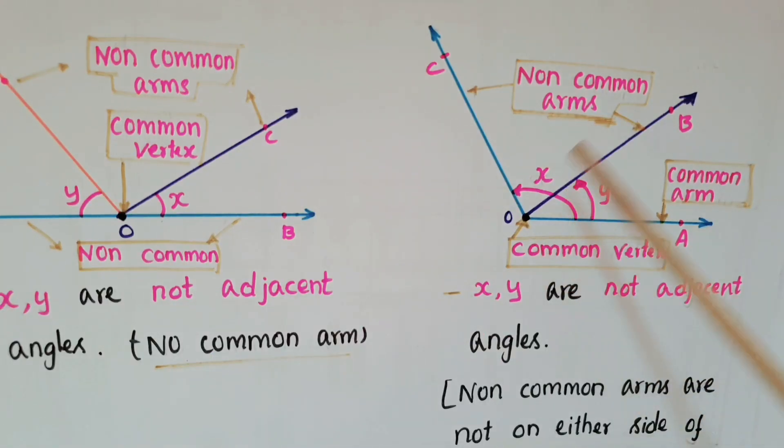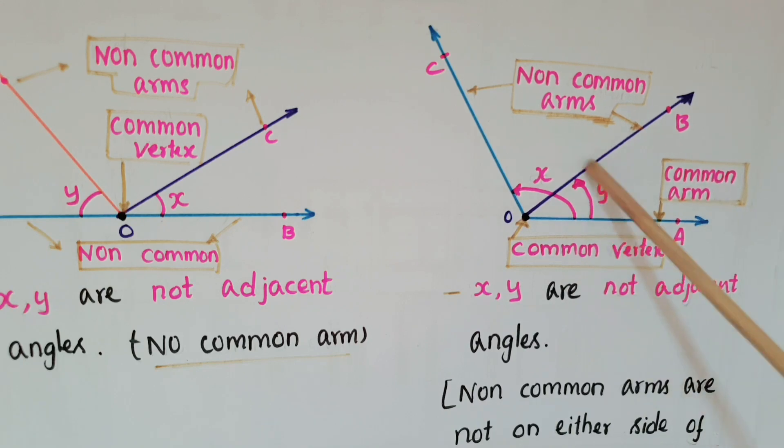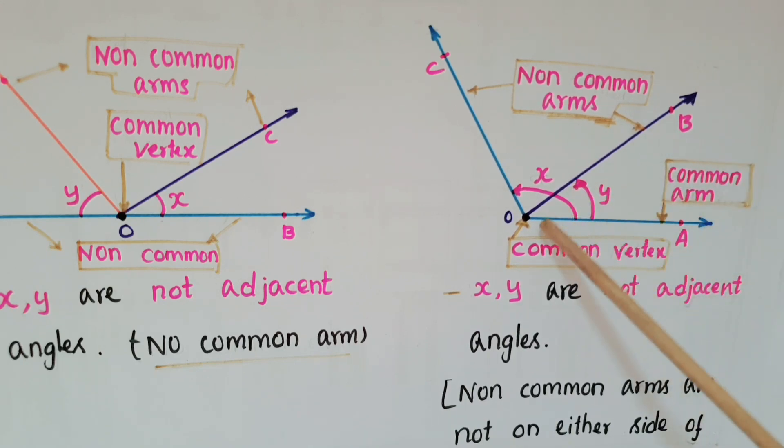See this figure. Here O is the common vertex for X and Y angles. This is X and this is Y angle, and OA is the common arm for these two angles. But here the non-common arms are not on either side of this common arm. This is common arm OA. So these two angles X and Y are not adjacent angles.